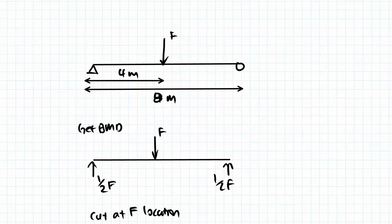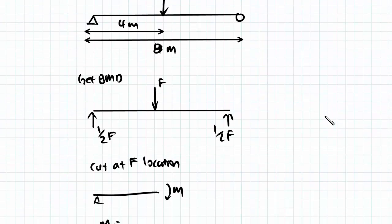Now we're going to solve it. One of the first steps to solving anything involving bending is to find the variables we don't know. This often involves finding our bending moment and our bending moment diagram. We start by solving for the reaction forces so that we can find our bending moment. For a simply supported beam with a single point force acting at mid-span, we can use symmetry to find that the reaction at each support is F over 2. We can then cut the beam at F to find our bending moment.